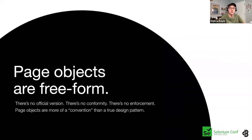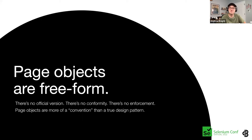More frustratingly, the page object code shown is merely one type of implementation. Every team implements page objects differently — there's no official version of the page object model and no conformity in its design. Even worse, there's almost no way for the pattern to enforce good practices. That's why people argue whether page object locators should be public or private. Page objects would be better described as a convention rather than a true design pattern.